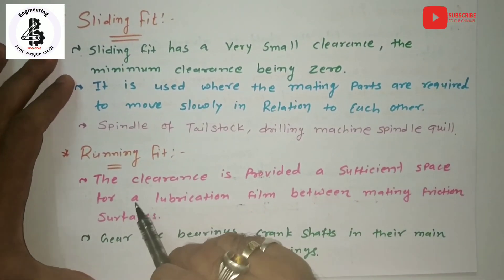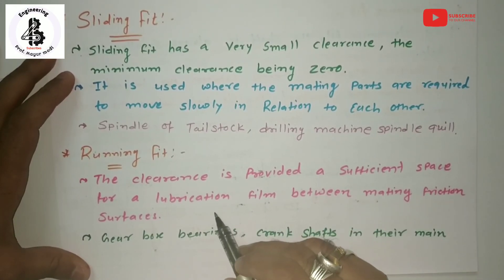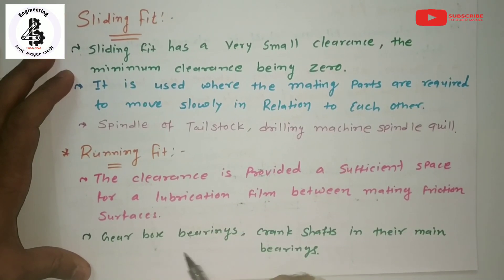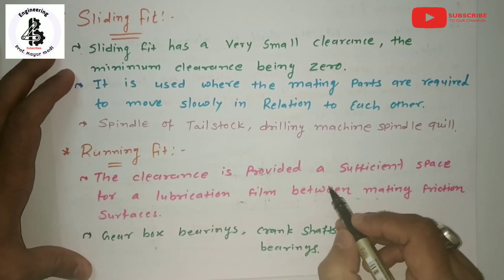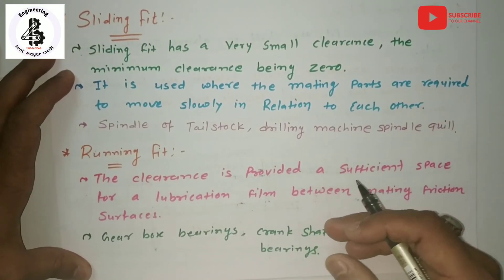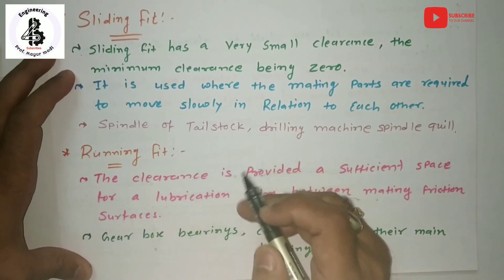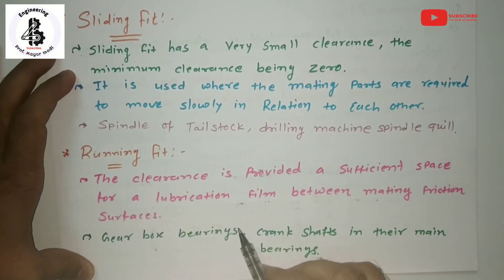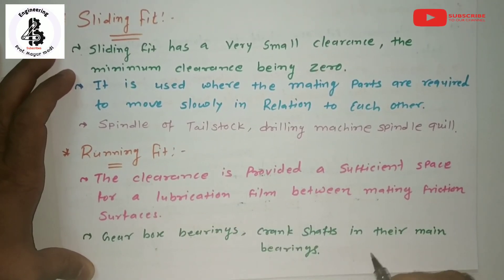For the running fit, the clearance provides sufficient space for lubrication between the mating friction surfaces. Examples of running fits include gearbox bearings and crankshafts in their main bearings — these provide passage for lubrication, oil, or grease. These two are the sub-types of clearance fit: first, the sliding fit (e.g., spindle of tailstocks), and second, the running fit (e.g., crankshaft in main bearings).